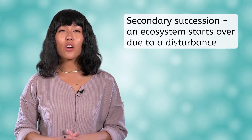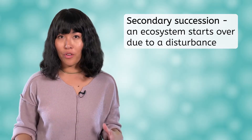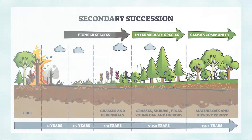Now that we've seen how an ecosystem forms from scratch, let's look at secondary succession, which occurs when an ecosystem that was already in existence has to start over. This occurs because of a disturbance. Disturbances include forest fires, hurricanes, and human activity such as deforestation. The steps of secondary succession will be very similar to the steps of primary succession. The biggest difference is that they will happen faster because the underlying soil will not be completely destroyed, even if it sustains some damage in the top layers.